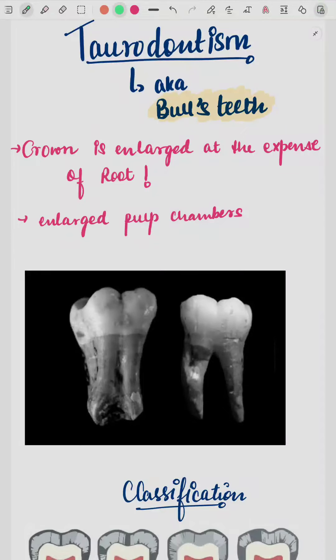Today we are looking at taurodontism. Taurodontism is known as bull's teeth because the teeth are very bulky.